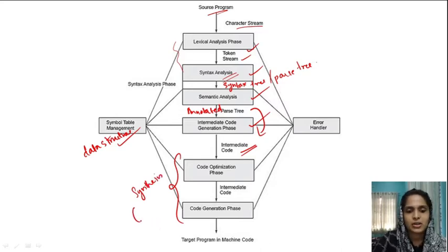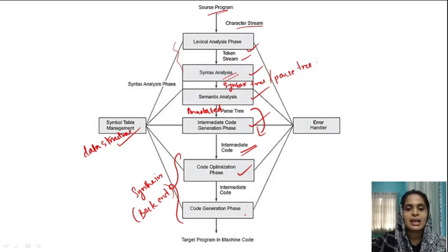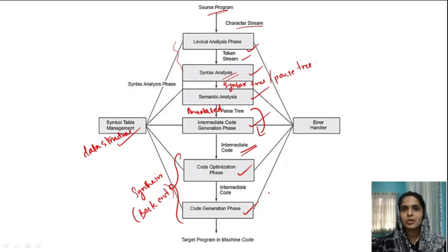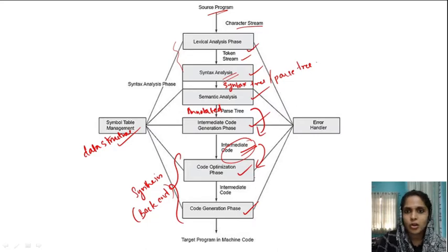The synthesis phase is also known as the back end of a compiler. It consists of two phases: the first is the code optimization phase and the second is the code generation phase. The output of the analysis front end — the intermediate code — is fed into the code optimization phase.